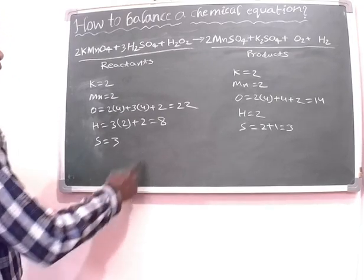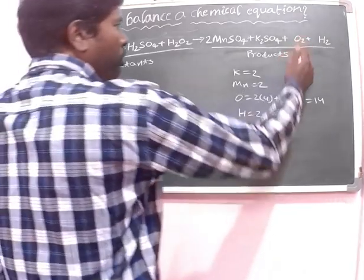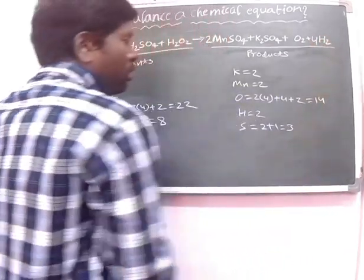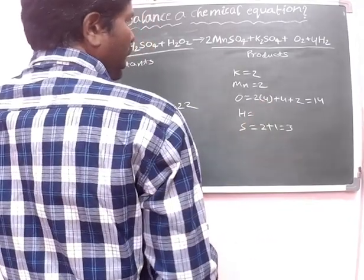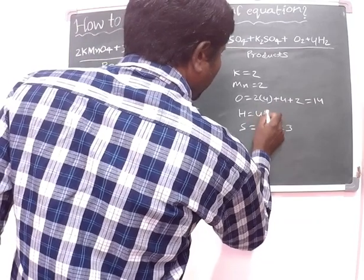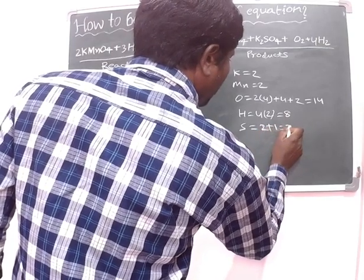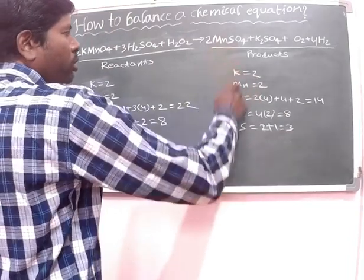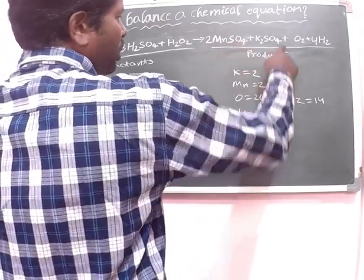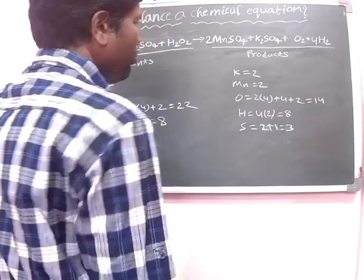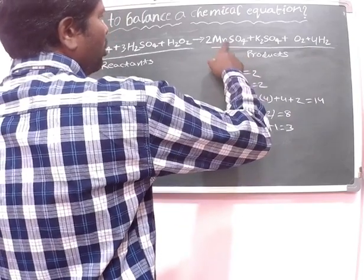Now we need to balance the hydrogen atoms. To do this we need to put a coefficient of 4 in front of H2. Now the hydrogen atoms are changed — 4 into 2, that is equal to 8. So the number of potassium atoms are 2, the number of manganese atoms are 2, the number of oxygen atoms are 2 into 4 plus 4 plus 2, that is equal to 14, the number of hydrogen atoms are 4 into 2, that is equal to 8, and the number of sulfur atoms are 2 plus 1, that is equal to 3.